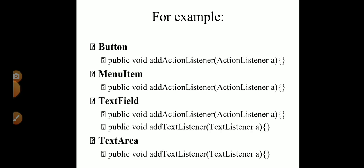To register a listener for a button, you have to use action listener — that is, use the function addActionListener. For menu items you also use action listener with the function addActionListener. For a text field you use action listener as well as text listener; the functions used are addActionListener and addTextListener. For text area you use text listener, so the function used is addTextListener.